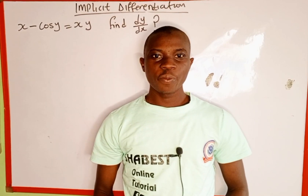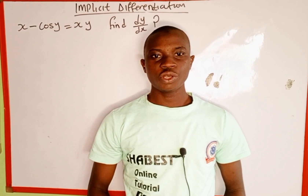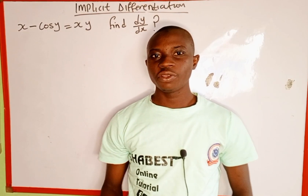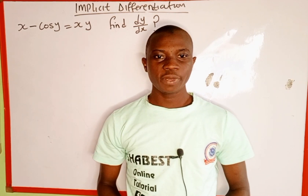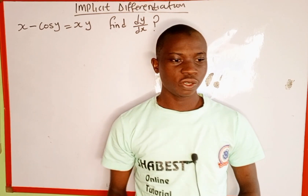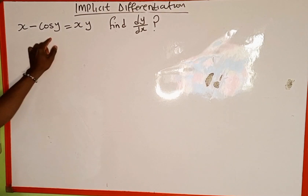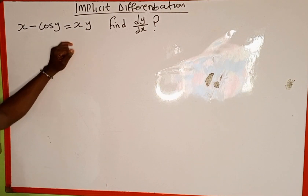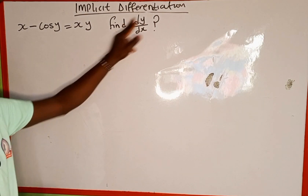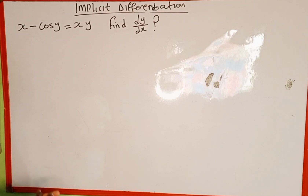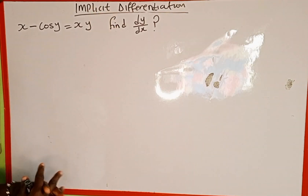Hello everyone, welcome back to Shabez online tutorial. In today's tutorial we're going to differentiate this function with respect to x using implicit differentiation. The given function is x minus cosine y equals xy, and we are asked to find dy over dx. So this is implicit differentiation.